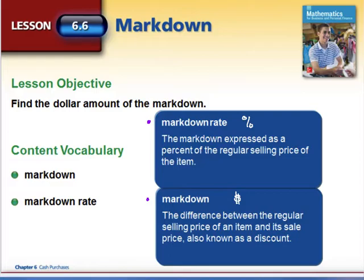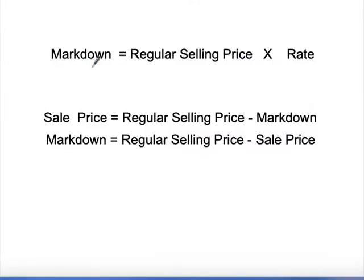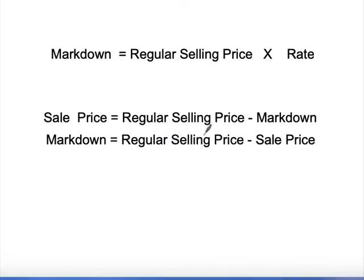We have a couple of formulas today. First, to calculate the markdown, take the regular selling price and multiply it by the rate — remember the rate always has to be in decimal form. Then to find the sell price, take the regular selling price and subtract the markdown. If you need to find the markdown and are given different information, you can rearrange and take the regular selling price minus the sell price.